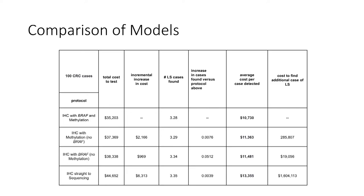You could do it with just immunohistochemistry straight to sequencing. You could do immunohistochemistry with BRAF testing but no methylation testing. You could do methylation testing with no BRAF. And you could do immunohistochemistry with BRAF and methylation. The bottom line is, from the perspective of the healthcare system — how much am I going to need to spend to detect a case of Lynch syndrome — you can tell there's a very significant difference between the approaches. From an implementation perspective, we didn't lose any sensitivity, but we saved a significant amount of money. So this told us how best to do the implementation.